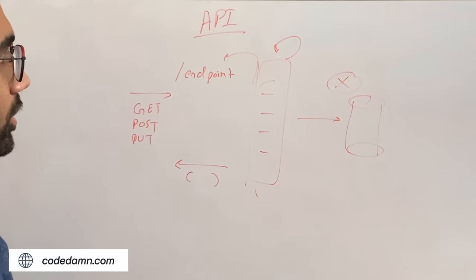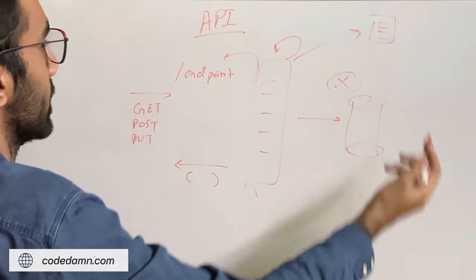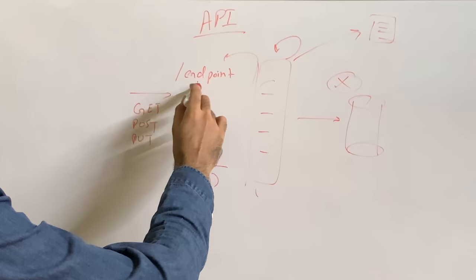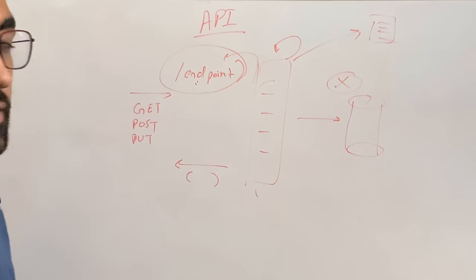So that's completely fine. Or this could be just communicating with some other computer on the web as well. There are multiple ways your API can be structured. But in this video, let's just take a look at how you can host this endpoint on internet.